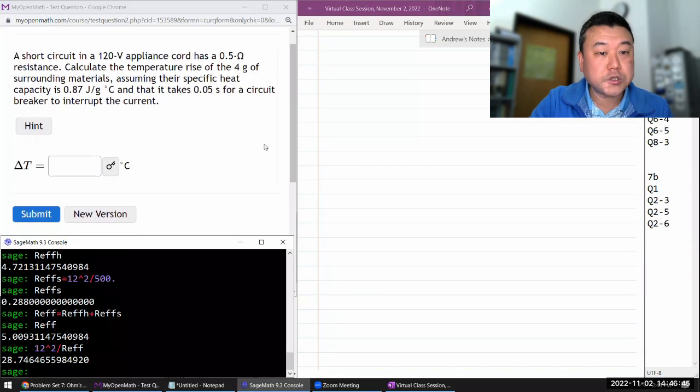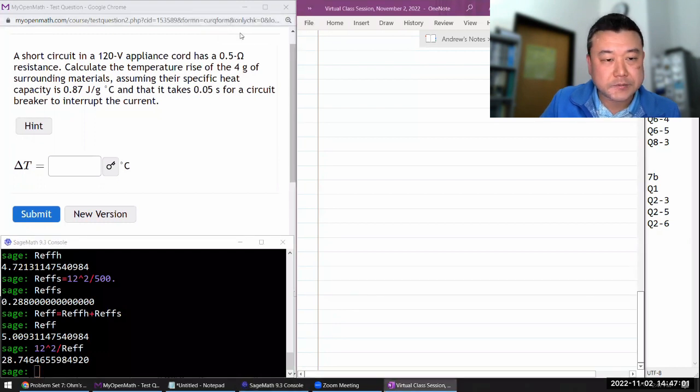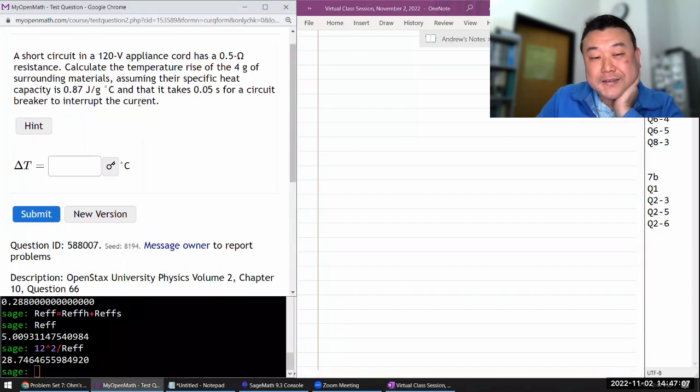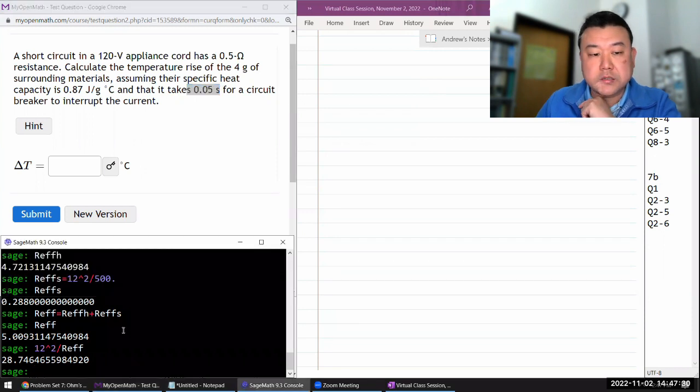So this question says, short circuit in a 120 volt appliance cord has a 0.5 ohm resistance. It's got multiple steps. So it looks like it's having us bring in some material from our thermodynamics. So let me do it in two steps.